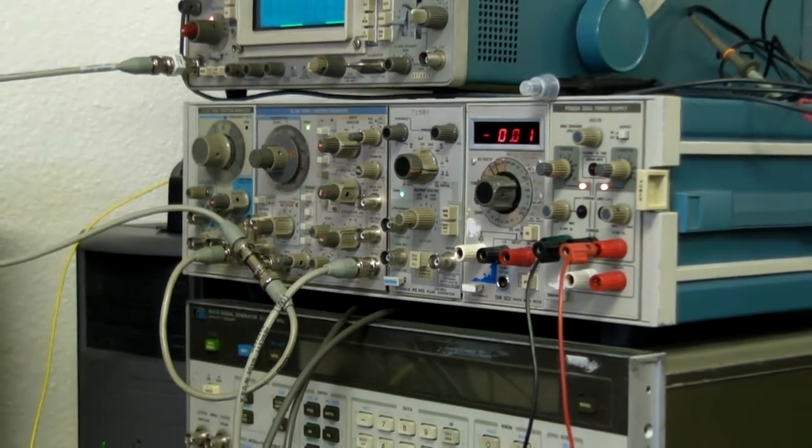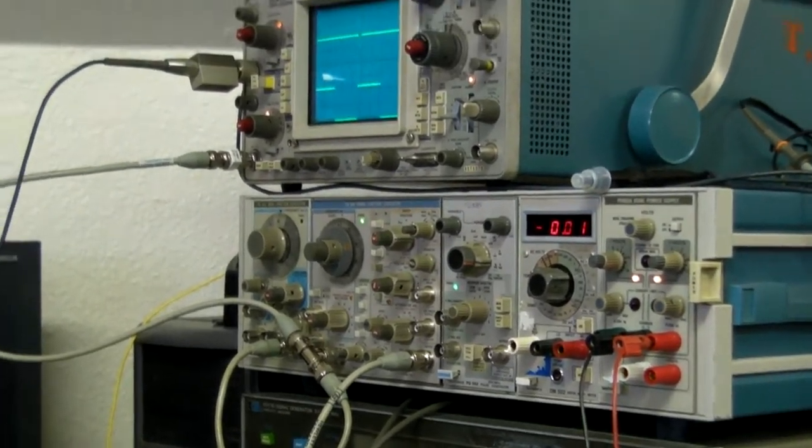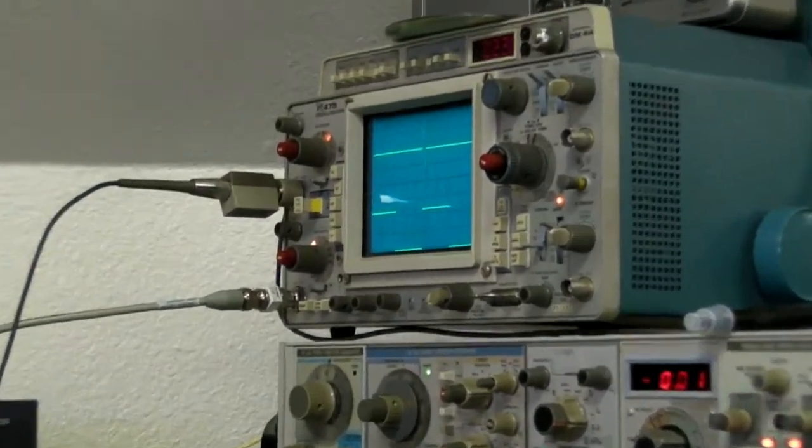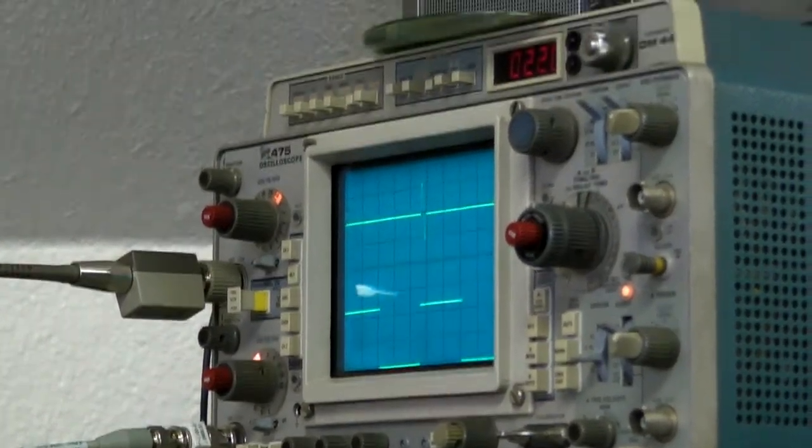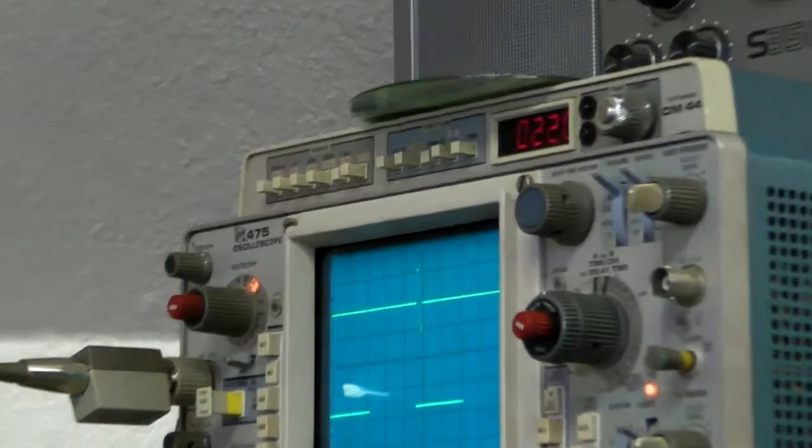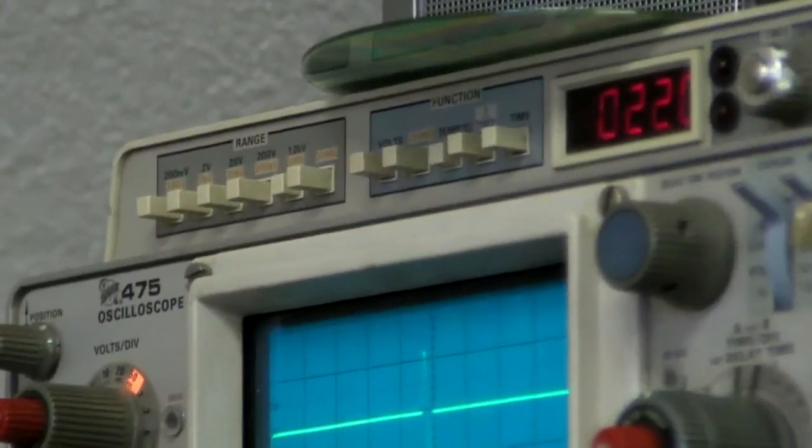You know, when we were Boy Scouts, this is the stuff we wanted. That's right. And you got a 475? Yeah, 475 DM44 with the accessory multimeter and stuff on top.